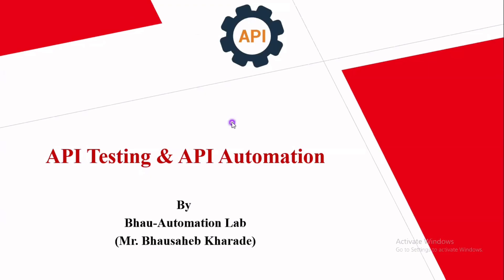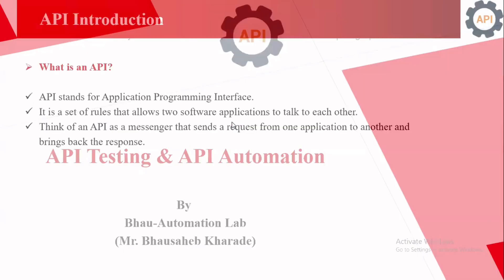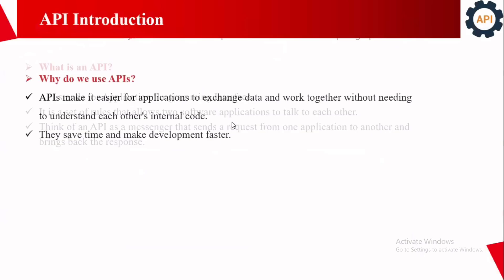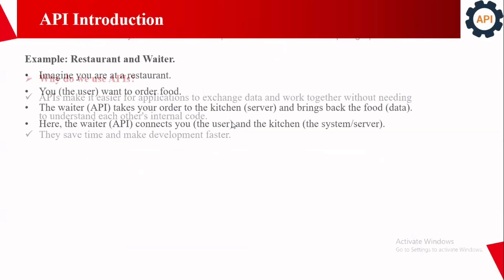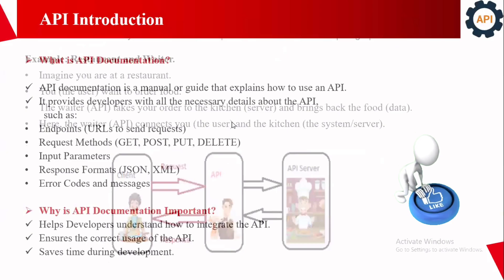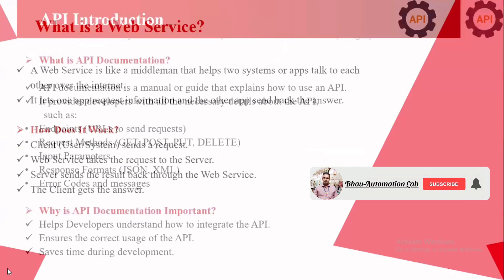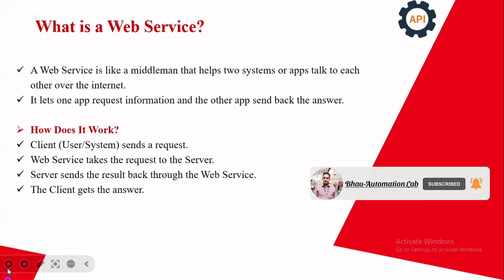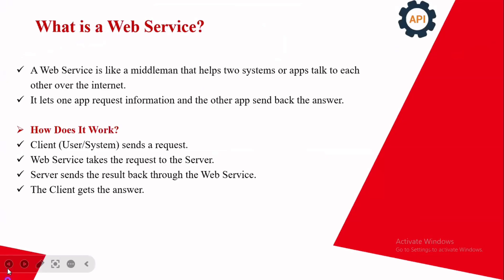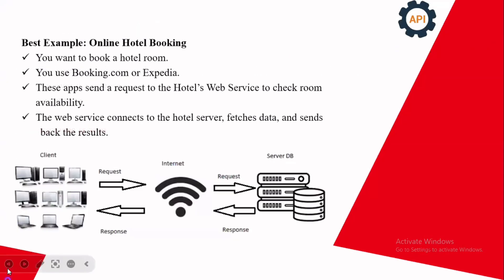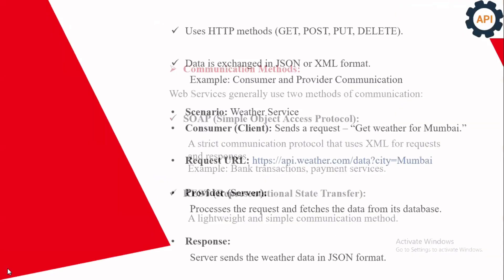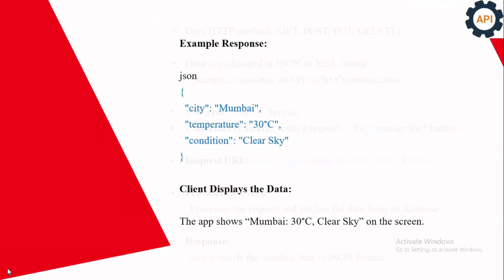Hey, hi friends, welcome back to Bow Automation Lab. Let's continue the session related to API testing and API automation. In the previous session we learned what is meant by API, why we use APIs, and we saw some examples. We also understood what API documentation is and why it's important, what web services are, how they work, and the communication methods.